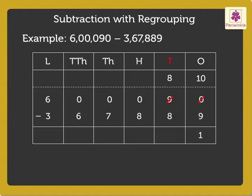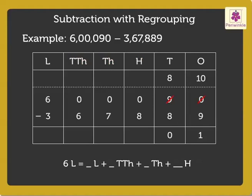Subtract the tens, i.e. 8 minus 8 is equal to 0. Now, as there are not enough hundreds, thousands and ten thousands, we need to regroup the lakhs. So, 6 lakhs is regrouped as 5 lakhs plus 9 ten thousands plus 9 thousands plus 10 hundreds.